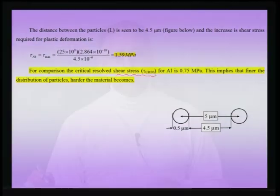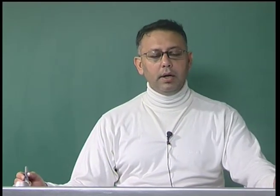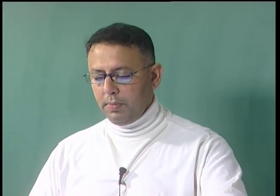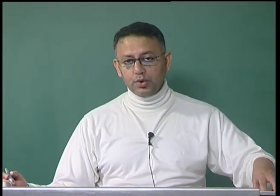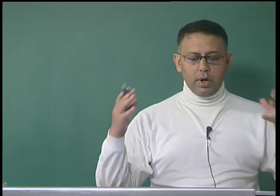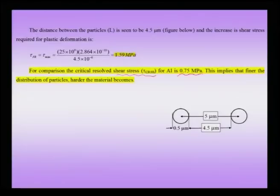I need to compare this number with the critical resolved shear stress (CRSS), τ_CRSS. The CRSS is similar to the Peierls stress we talked about before — the difference being that τ_CRSS is usually experimentally determined while Peierls stress is theoretically determined. The τ_CRSS is the resolved shear stress which needs to act on the slip plane to activate slip — it is an inherent material property at the atomic level, unlike the gross macroscopic yield stress. For aluminium, τ_CRSS is 0.75 MPa. By adding these incoherent precipitates, I obtain a strengthening effect above this 0.75 MPa — up to 1.59 MPa.